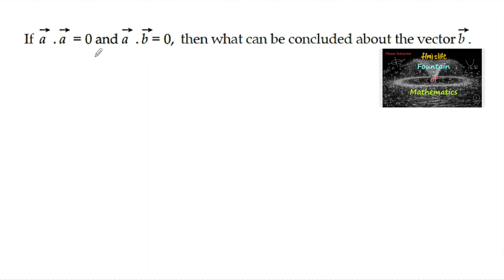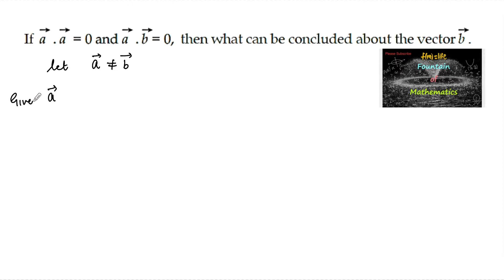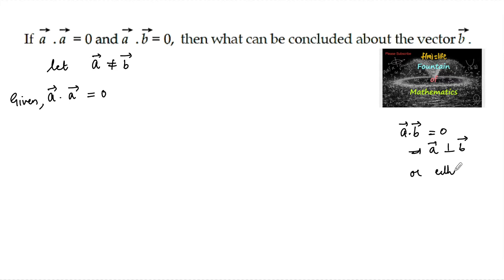If a·a = 0 and a·b = 0 — meaning the dot product of a vector with itself is 0 and the dot product between two different vectors is 0 — then what can be concluded about vector b? Let us consider vector a is not equal to vector b; both are unequal vectors. Given a·a = 0, the dot product of the same vector with itself is 0. And a·b = 0 implies that vector a is perpendicular to vector b, or one of the vectors is 0.